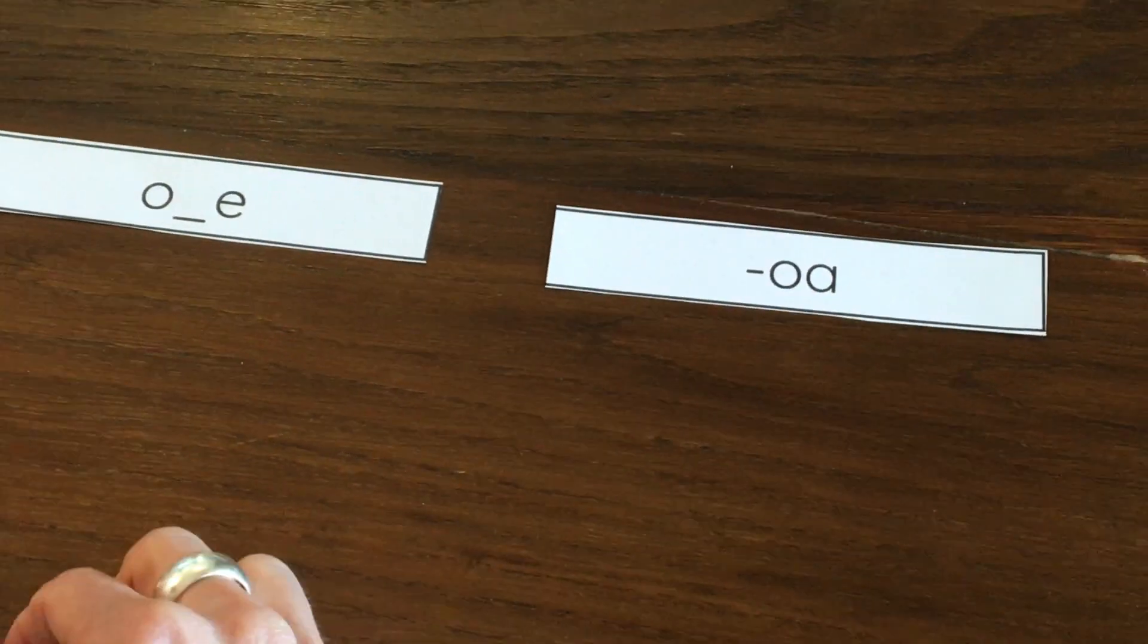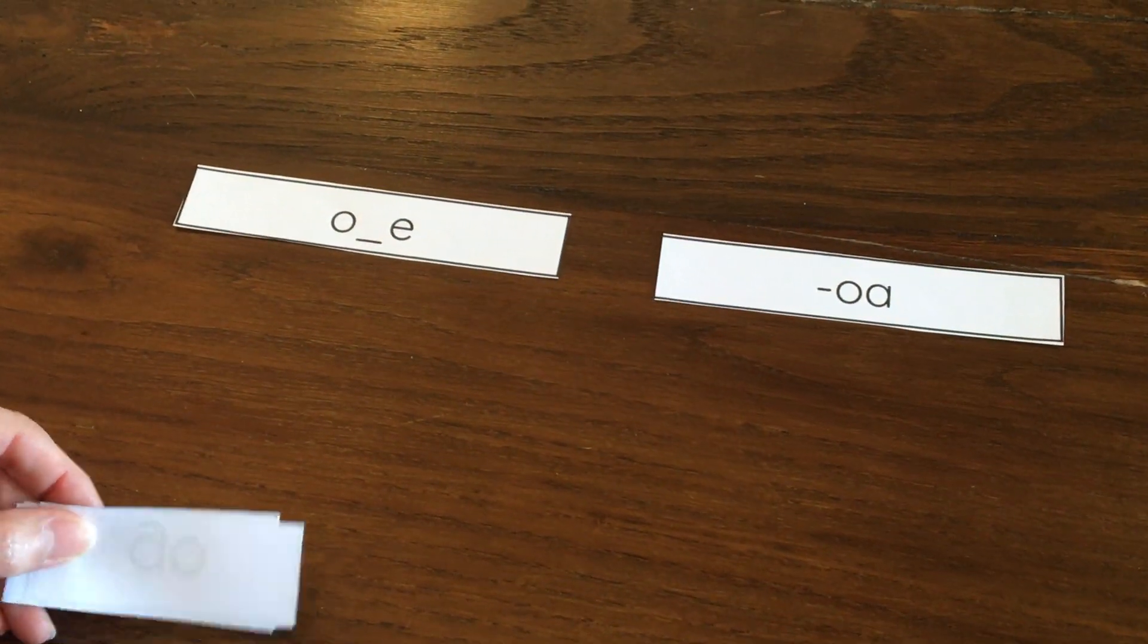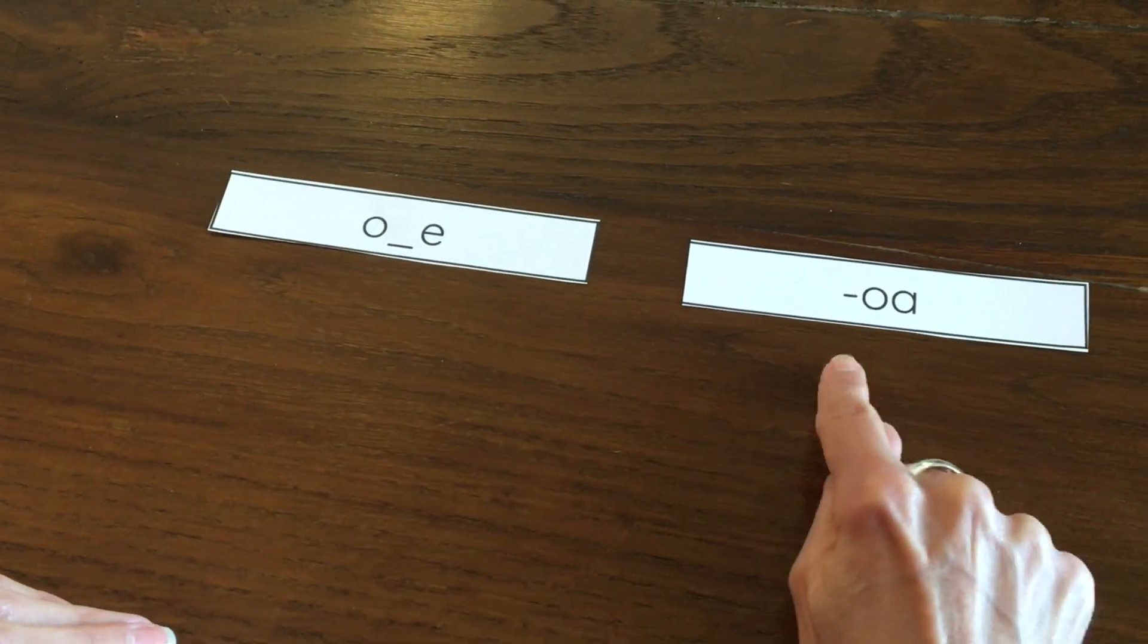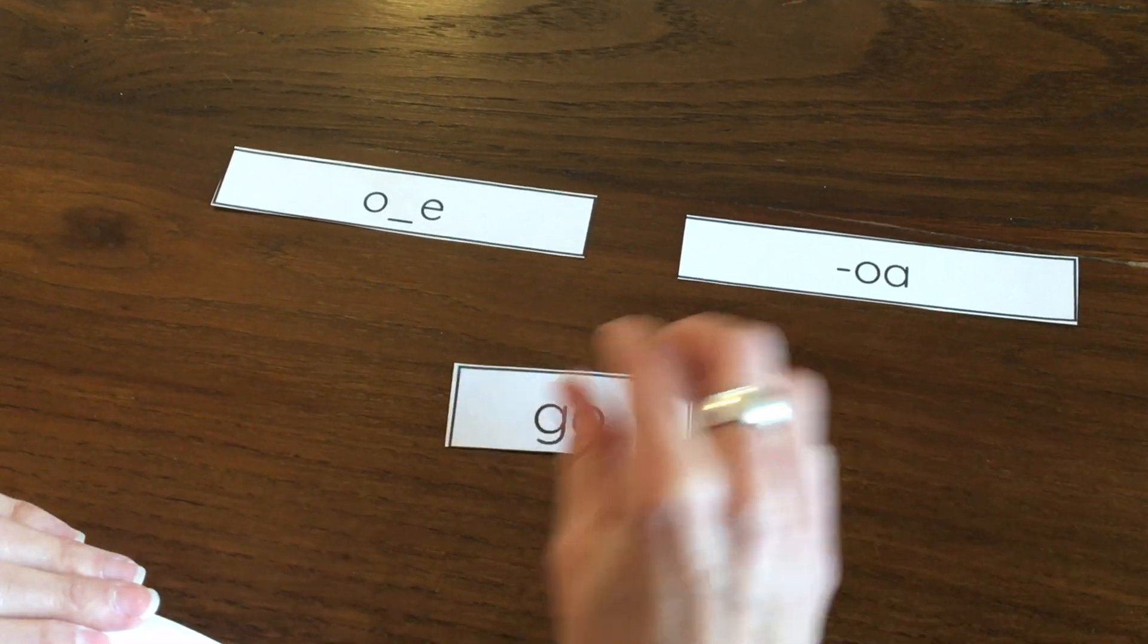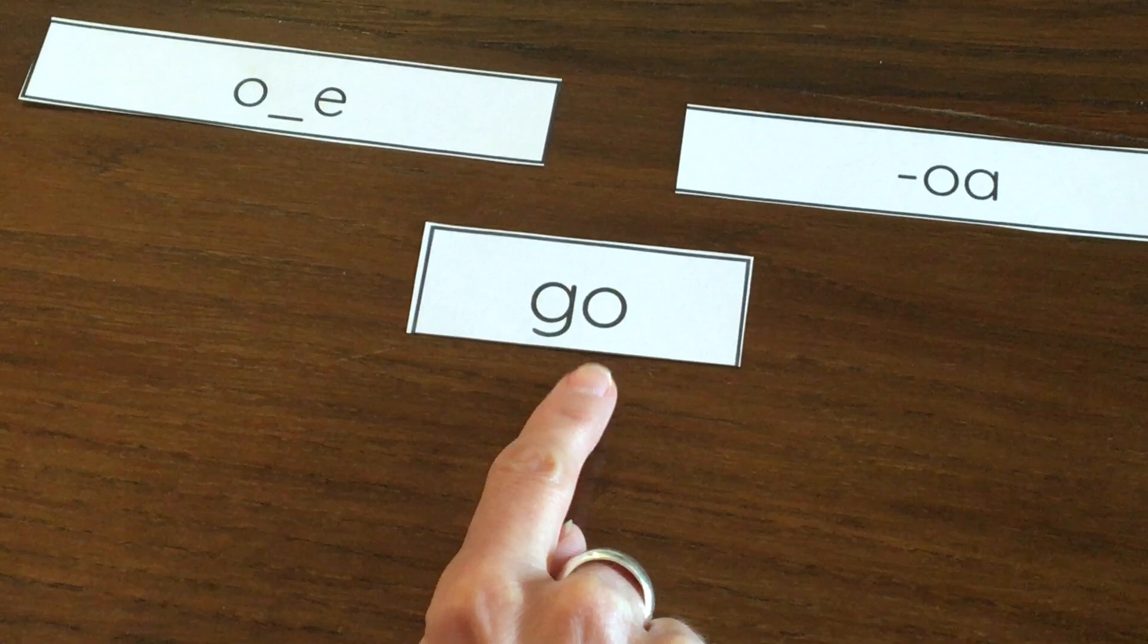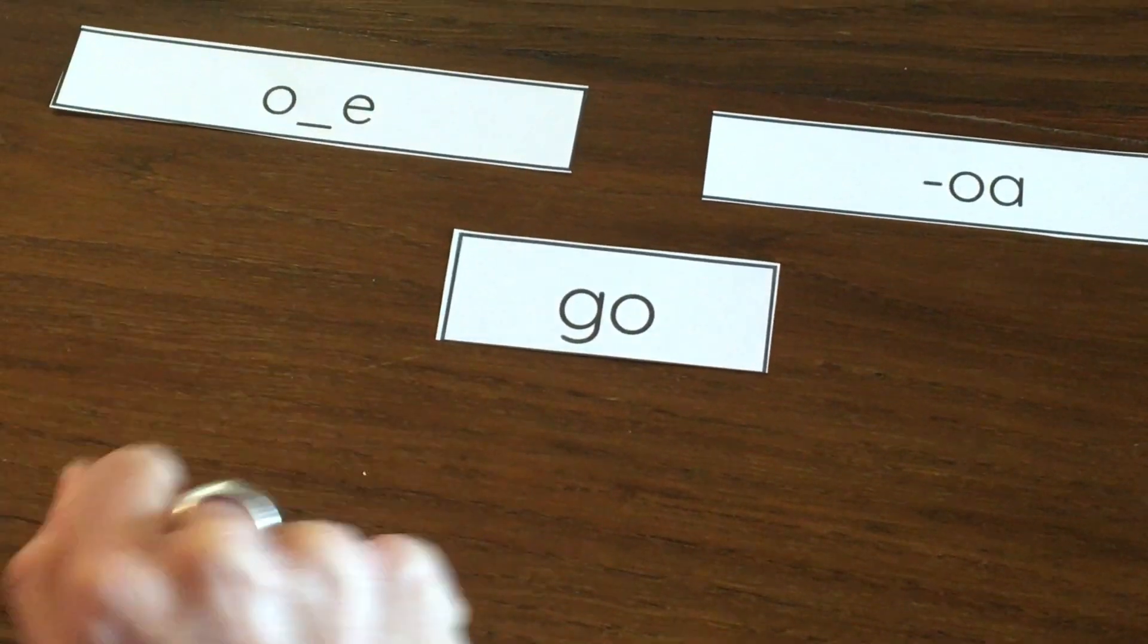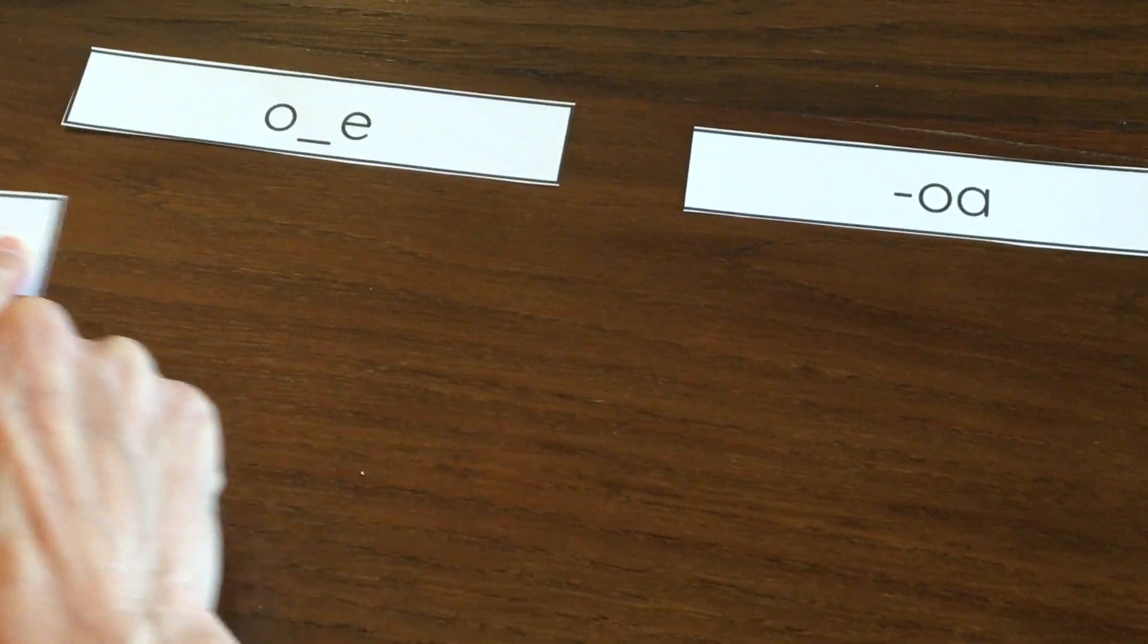But before we do that, I want to show you a few words that also have the O sound, but don't have this spelling and don't have this spelling. Look at this one. You guys know this word, go. Notice that it just has an O by itself after the G. There's no silent E, there's no A, but it also makes that O sound.